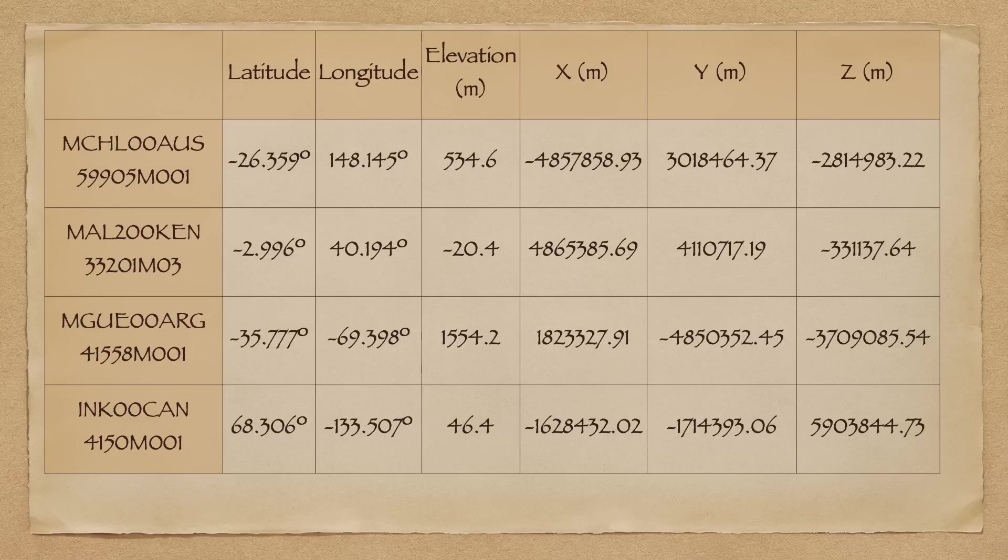Those IGS stations are plotted here as black circles. IGS stands for the International GNSS Service. And GNSS stands for Global Navigation Satellite System. I really hate nested acronyms. In this table, I've listed the identifiers of the four IGS sites, their latitude, longitude, and elevation, and their Cartesian coordinates in the International Terrestrial Reference Frame.